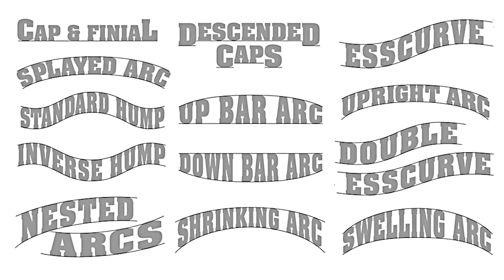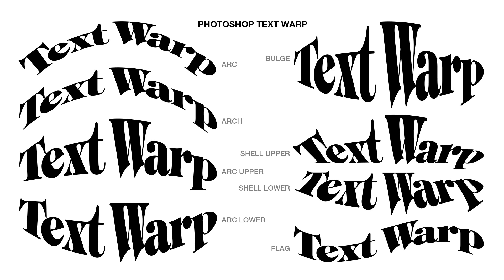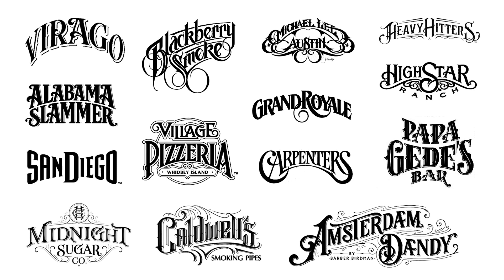Note that, with the exception of the splayed arc, the verticals in each letter remain vertical. Textwarp tools don't do that so well in some of these configurations. Flourishes and swashes are frequent welcome additions to sculpted type. This approach can be particularly effective in wordmark design to evoke associations either with old-fashioned nostalgia or futuristic mystique.